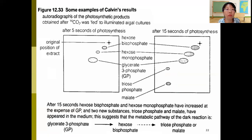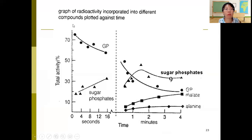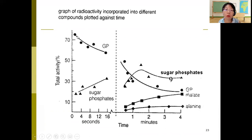Looking at the results plotted on a graph, samples collected at different time points were run through chromatography and autoradiography, and radioactivity was counted and converted to total activity. This shows that GP is formed first, and as GP is converted to something else, the sugar phosphate — which must be TP — starts to increase. It's a very effective experiment.